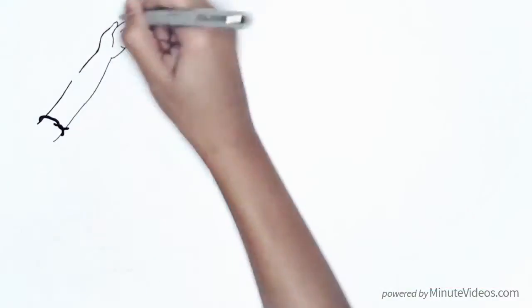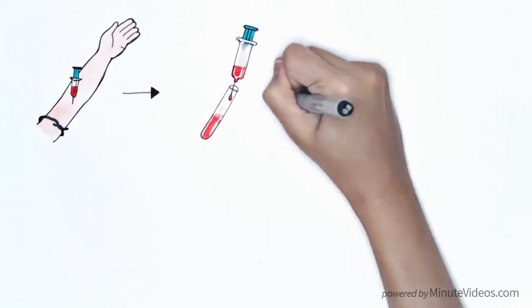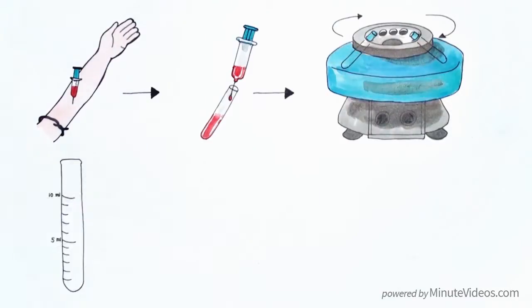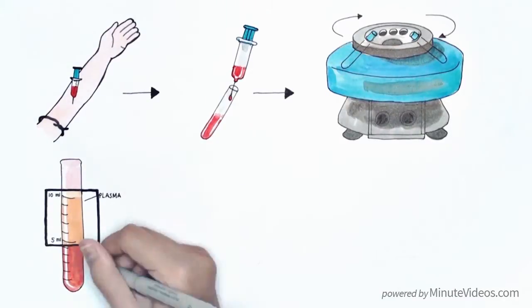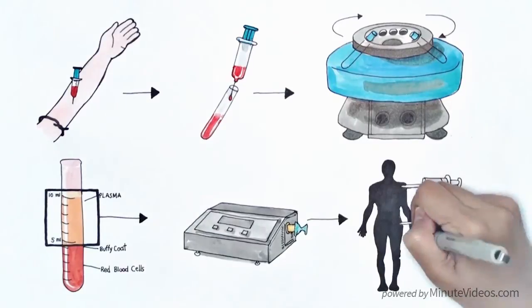PRP takes advantage of this process in a very simple way. A small amount of blood is extracted from the patient then centrifuged to extract only the blood's platelets and plasma, photo activated with light and then injected back into the area of injury.